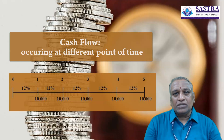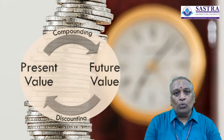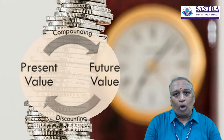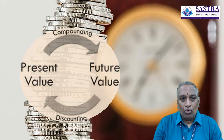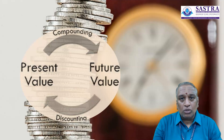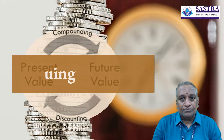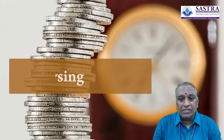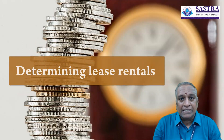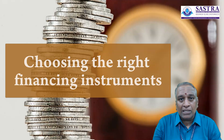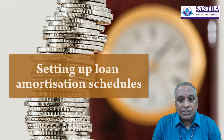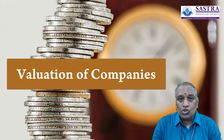Cash flows in terms of receipts and payments occur at different points in time. Compounding and discounting are the two important tools used to convert cash flows to a common point in time. You should understand the tools of compounding and discounting which influence most of the financial decisions — especially valuing securities, analyzing projects, determining lease rentals, choosing financing instruments, setting up loan amortization schedules, and valuation of companies and so on.